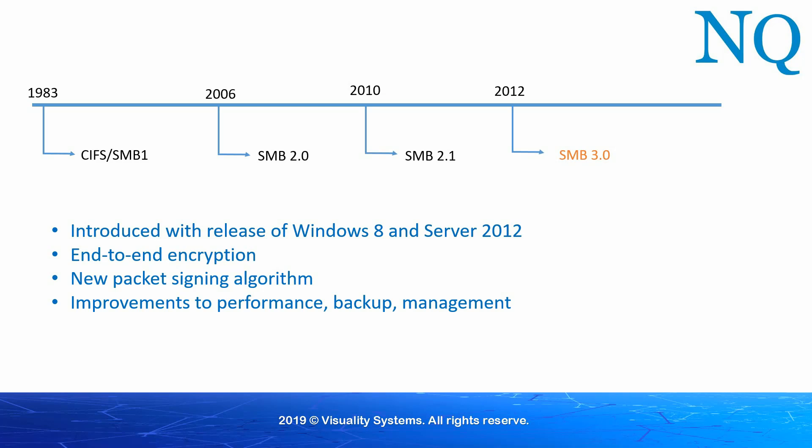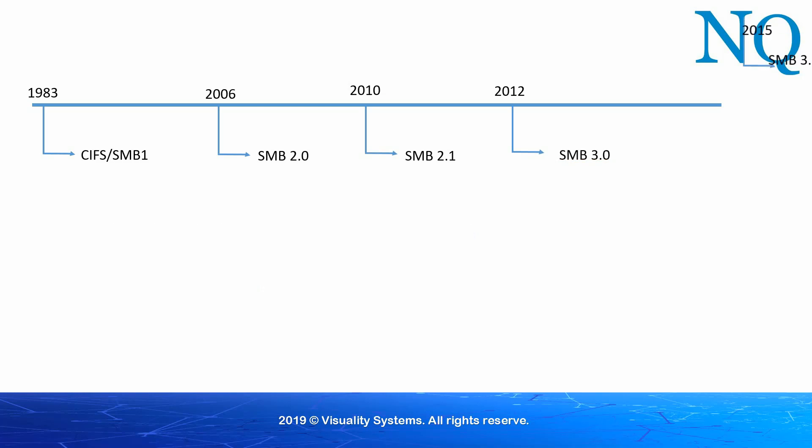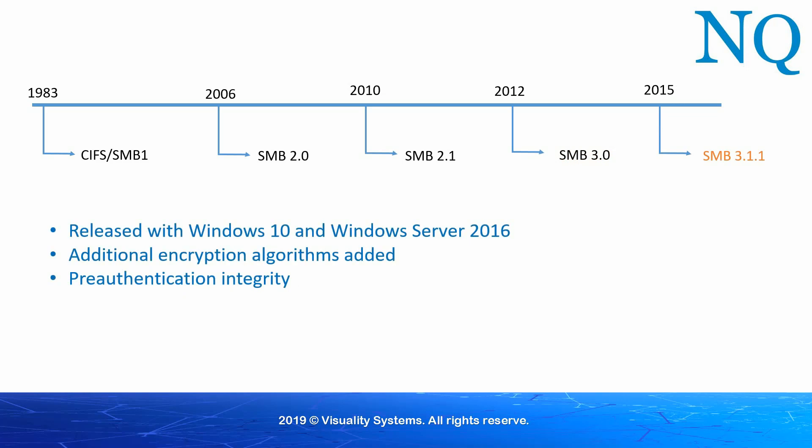The latest release of SMB is version 3.1.1. It was released with Windows 10 and Server 2016, back in 2015. Additional encryption algorithms were added to this version of SMB. In addition, it also made mandatory secure negotiation when connecting to clients using SMB2 or higher.